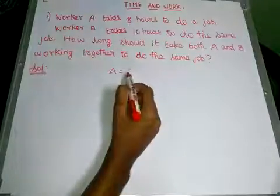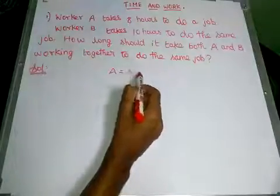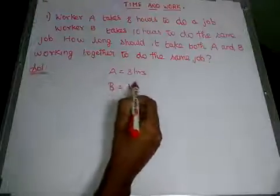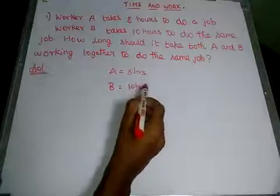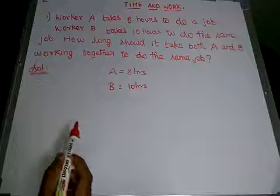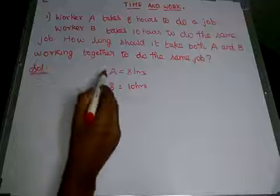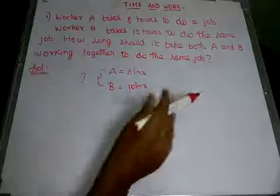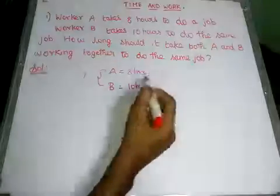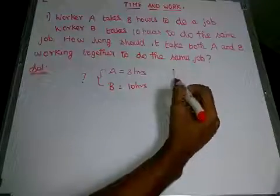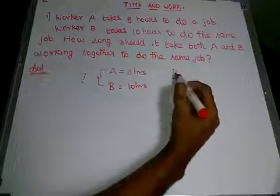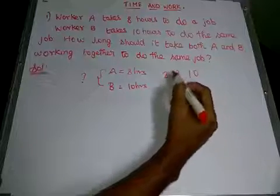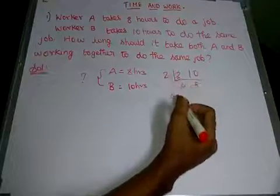First, write the data. A can work for 8 hours to complete a job and B takes 10 hours to complete the job. The question is: if they are working together, at what time will they complete the job? We just have to take LCM for 8 and 10. The LCM is 40.